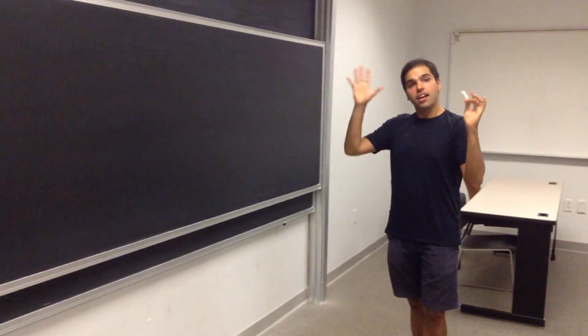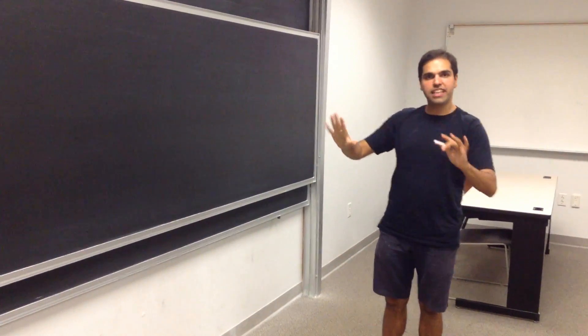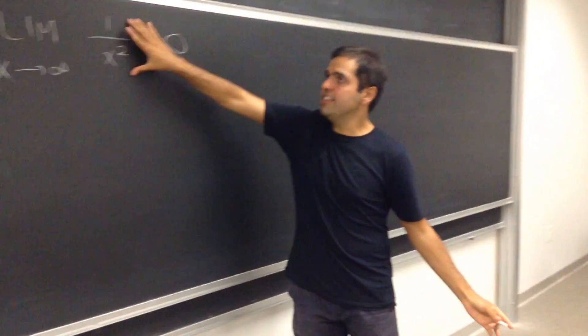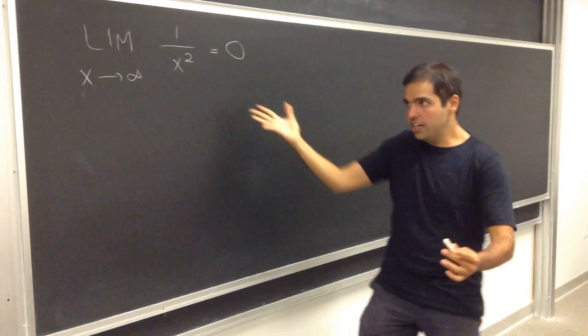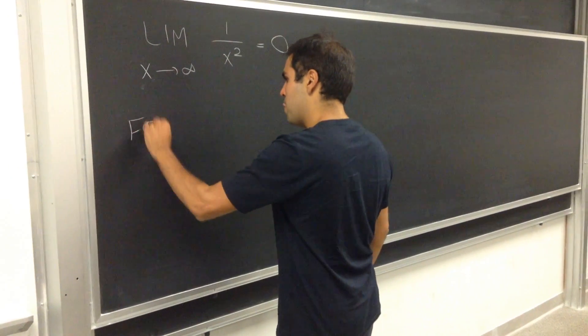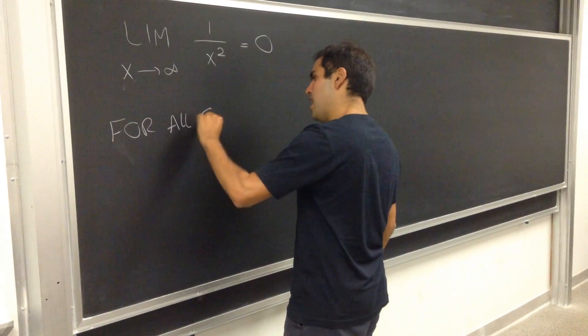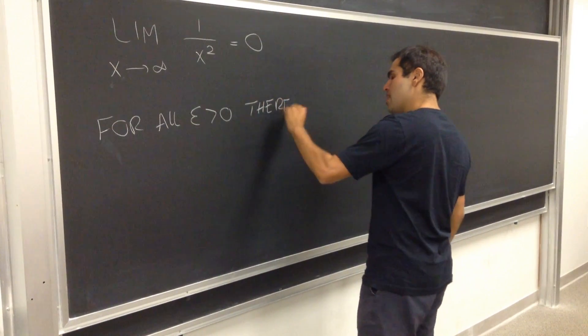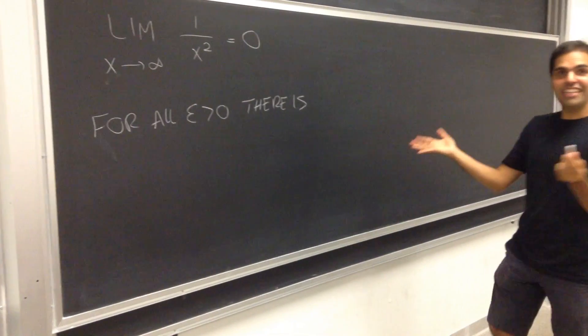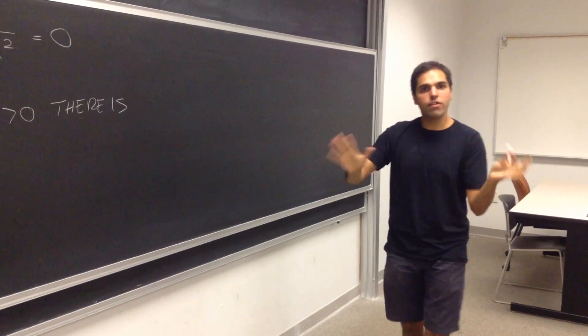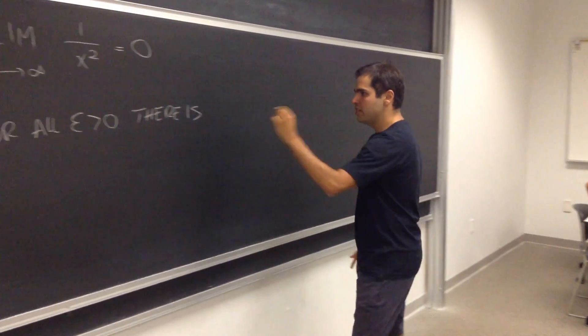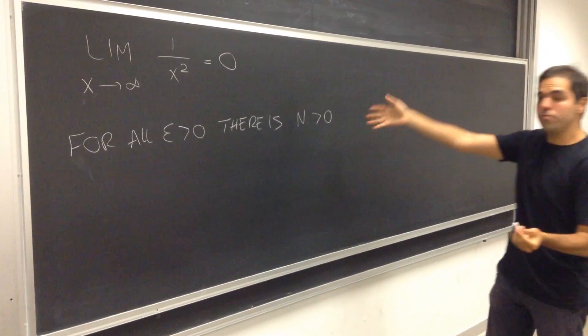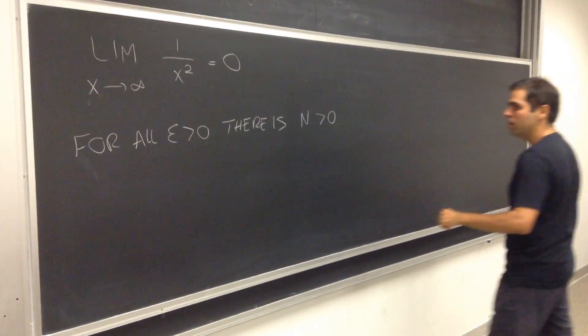What does that mean? Strictly speaking, it means that if x gets very large, this thing is as small as we like. In other words, for all epsilon positive, there is, usually you write delta, but delta means very small. Here we want a really big number, so there is N, for example, positive. Doesn't have to be an integer, could be a real number, such that